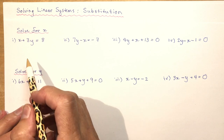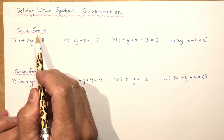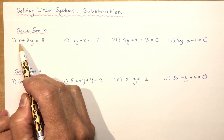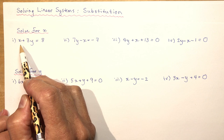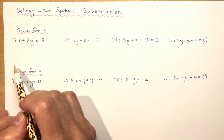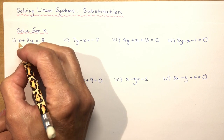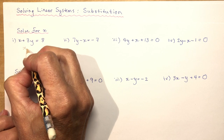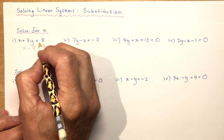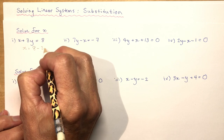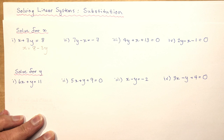For the first question here it says solve for x: x plus 3y equals 8. Solving for x means I want to isolate x by putting it on one side of the equation and everything else on the other side. So very easy here — x equals 8 minus 3y, and that is solving for x.